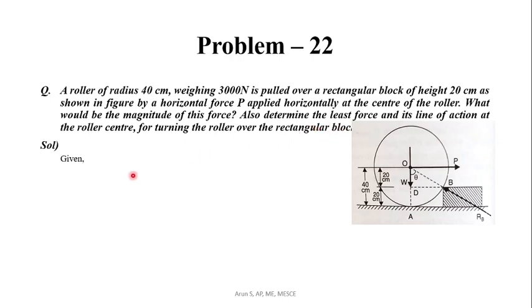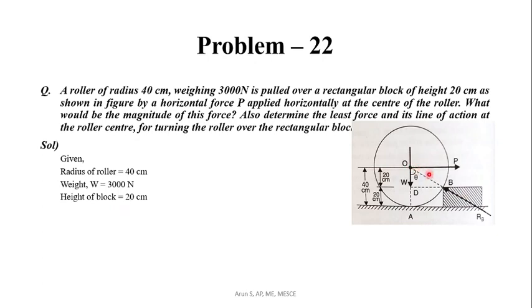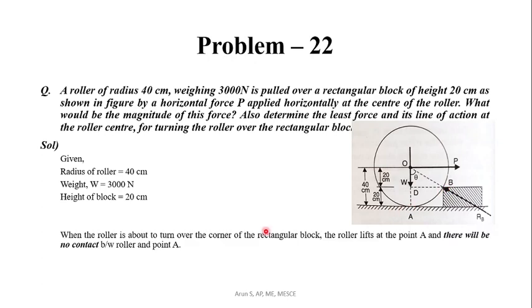Looking at the question, the radius of the roller is 40 cm and the height of the block is 20 cm. When considering the rotation condition, the roller will have contact with the block at point B. When the roller is about to turn over the corner of the rectangular block, the roller lifts at point A and there will be no contact between the roller and point A. So the reaction at A, RA, will be equal to zero.